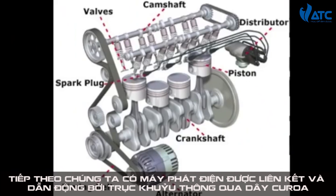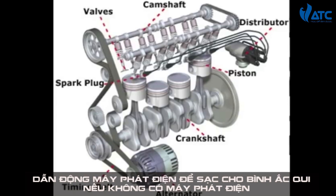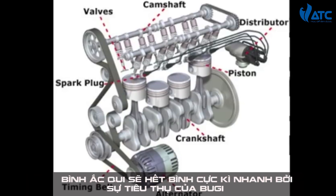Next we have the alternator. The alternator is connected by a belt to the crankshaft, and as the crankshaft turns it turns the alternator. The alternator charges the battery in the car so it doesn't die quickly — without an alternator the battery would die extremely fast. The timing belt connects the crankshaft, alternator, and camshaft so they all run in unison.